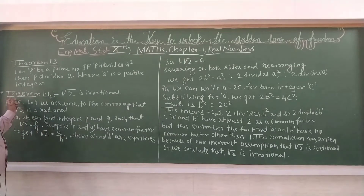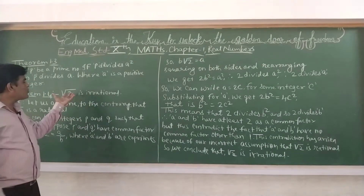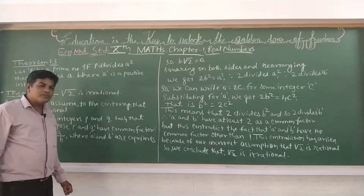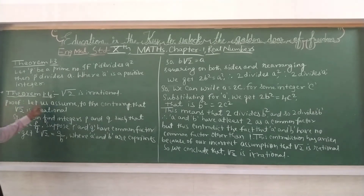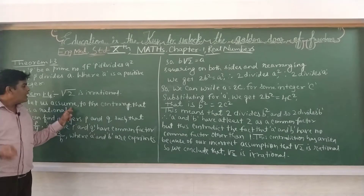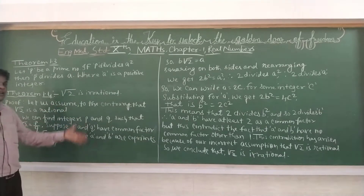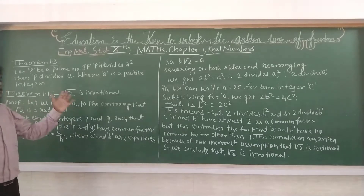So now we will cover Theorem 1.4. We have to prove that root 2 is irrational. Humein yeh prove karna hai ki root 2 ek irrational number hai. So to prove this, at first humein root 2 ko rational number assume karenge — let us assume, to the contrary, that root 2 is rational. Irrational ka opposite aapka rational hoti hai, isliye hum root 2 ko rational number le lenge.